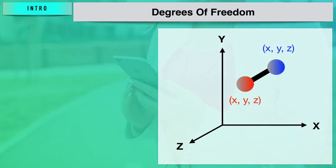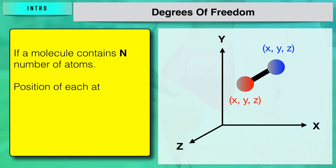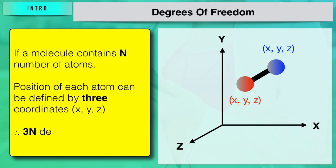Let us consider a molecule containing n atoms. The position of each atom can be defined by three coordinates x, y, and z. So if we need to specify the position of n number of atoms, we need 3n coordinates. Accordingly, the molecule has 3n degrees of freedom.